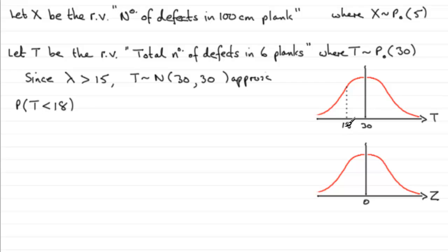We've got to use a continuity correction when we're working something out like this because we're going from a discrete random variable from the Poisson distribution to a continuous random variable. I'm assuming that you're familiar with this. If not, just go on my website and have a look at the tutorials for continuity correction.